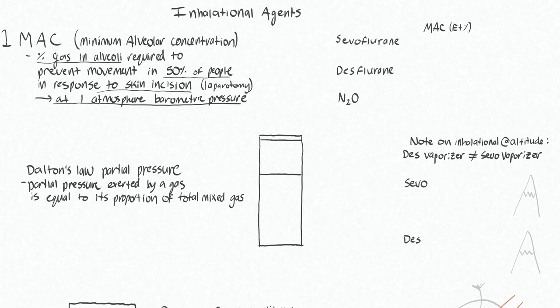There is a caveat that this is measured at one atmosphere of barometric pressure — we'll discuss why. Different inhalational agents require different concentrations to produce one MAC. For sevoflurane you need 2% end-tidal gas; for desflurane you need 6.3%; and for nitrous oxide you would need 104%, which is obviously not possible, making nitrous a poor standalone inhalational anesthetic.